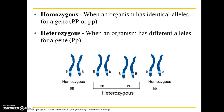Some more terminology: homozygous is when an organism has identical alleles for a gene — for example, big P big P, or little p little p would be a homozygous allele combination. Heterozygous refers to when an organism has different alleles for a gene — for example, big P little p.